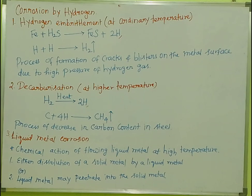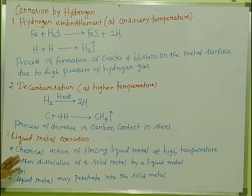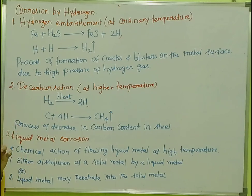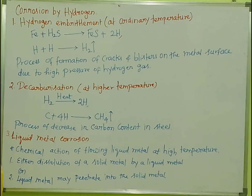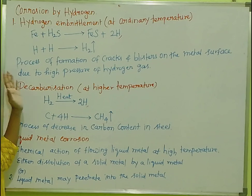So that covers a lot of topics. That is corrosion by oxygen, corrosion by hydrogen, and liquid metal corrosion — three types of dry corrosion. The next video is wet corrosion, or electrochemical corrosion, which occurs in the presence of moisture. If you like and share this video, please subscribe and support our channel. Thank you.